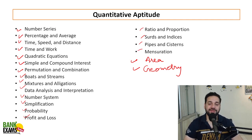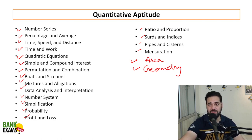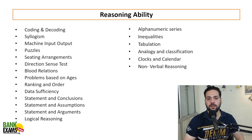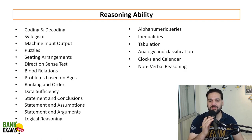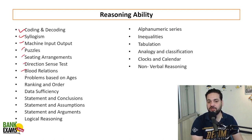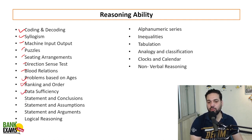We are going to cover each of these topics in the classes. For Reasoning Ability, the topics include: coding-decoding, syllogism, machine input-output, puzzles, sitting arrangement, direction sense test, blood relations, problems based on ages, ranking and order, data sufficiency, statements and conclusions, statement and assumptions, statements and arguments, and logical reasoning.